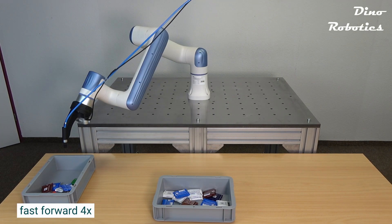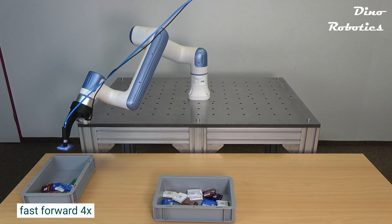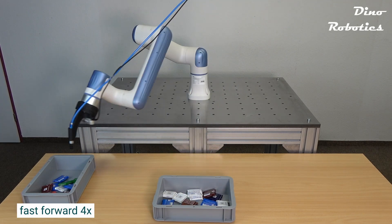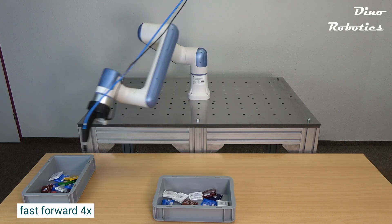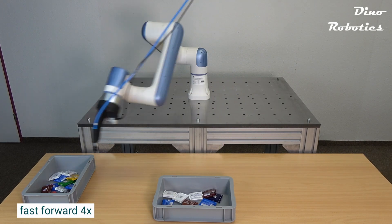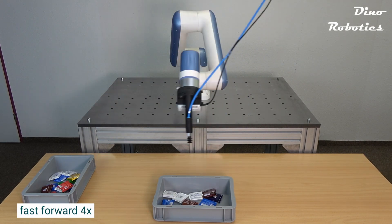In this video, we showcase the bin picking of small chocolates, a task we've successfully implemented with various robotic arms in our software. Testing this process with each newly integrated robot has become a standard routine for us.